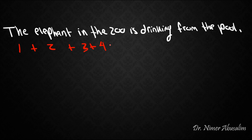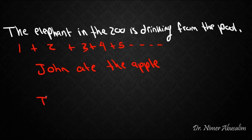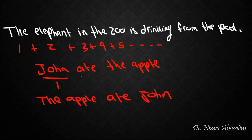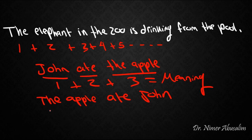Take this as an example: 'John ate the apple.' This does not mean the same thing as 'the apple ate John.' If the meaning of the sentence was just the meaning of 'John' plus the meaning of 'ate' plus the meaning of 'the apple,' then these two sentences should mean the same thing — but they don't.